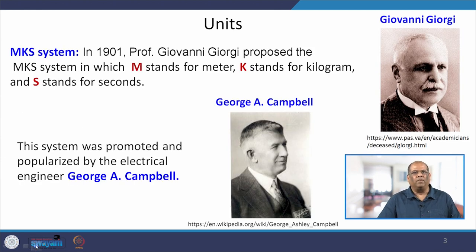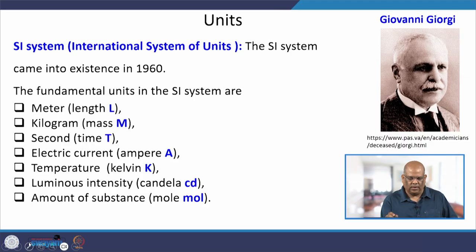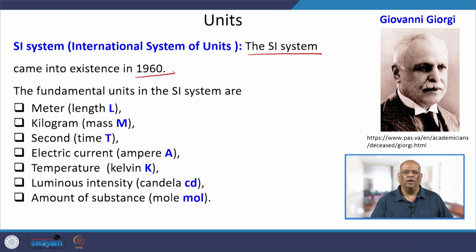The next system is the MKS system, proposed by Professor Giovanni Giorgi, where M stands for meter, K for kilogram, and S for seconds. This was further promoted and popularized by electrical engineer George A. Campbell. We now move to the SI system, that is the International System of Units, which came into existence in 1960 — and again the credit goes to Giovanni Giorgi.